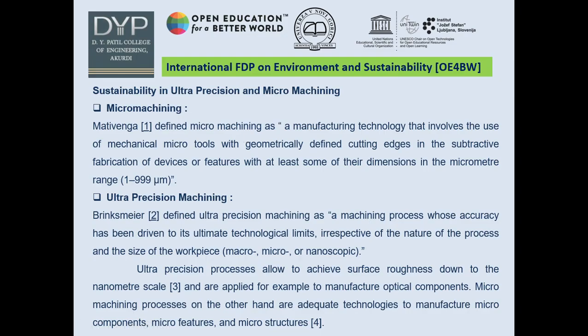Sustainability in ultra-precision and micro-machining: Mativenga defined micro-machining as a manufacturing technology involving the use of mechanical micro-tools with geometrically defined cutting edges in the fabrication of devices or features with at least some dimensions in the micrometer range, that is 1 to 999 micrometers. Bringsmear defined ultra-precision machining as a machining process whose accuracy has been driven to its ultimate technological limits, irrespective of the nature of the process and the size of the workpiece, down to micro, macro, or nanoscopic level. Ultra-precision processes allow achieving surface roughness down to the nanometer scale and are applied to manufacture optical components.